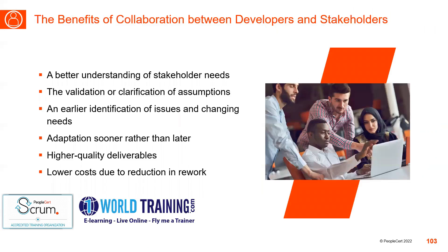After resolving the conflict for priorities and needs, we should think of how the benefits of collaboration between developer and stakeholder will yield better results. If you have fundamental alignment between developers and stakeholders, there will be a better understanding of stakeholder needs, which will obviously result in a better quality of product. Validation and clarification of assumptions results in early engagement with stakeholders.